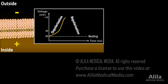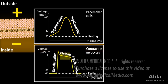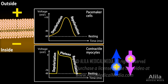The repolarization phase is due to net efflux of positive ions. Membrane potential becomes more negative and the cell is repolarized back to its original resting state. In cardiac myocytes, there is also a plateau phase, which occurs when the efflux of one positive ion is balanced by the influx of another, and membrane potential remains relatively unchanged.